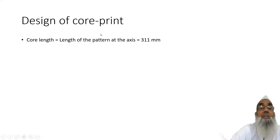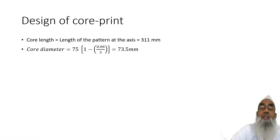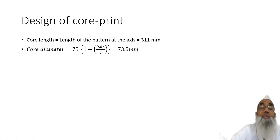Now we need to design the core print dimensions. The core length will be equal to the length of the pattern at the axis, which is 311 mm. The core diameter will be less than the original diameter of the product, because the metal will shrink and the core will expand. Therefore, we need to give sufficient allowance so that as the metal shrinks and the core expands, the hole comes to the required size.